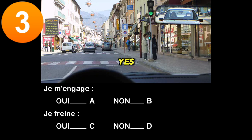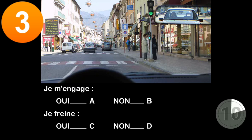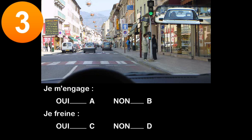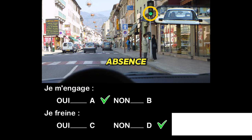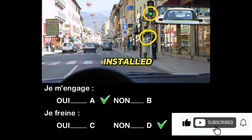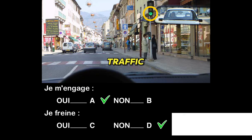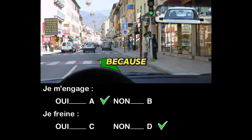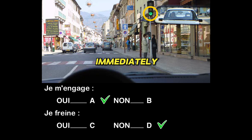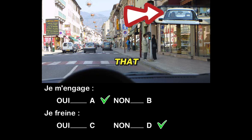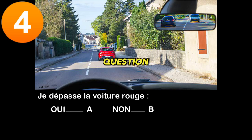Question three: do I engage? Yes (A) or no (B)? Do I brake? Yes (C) or no (D)? The light is green. In the absence of an intersection, these traffic lights are installed to allow pedestrians to cross. Traffic in front of me is slowed down. I still commit myself because I do not risk blocking users. I slow down gradually but do not brake immediately, so as not to surprise the driver of the vehicle following me closely.